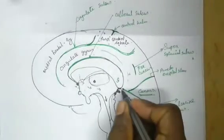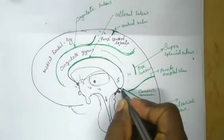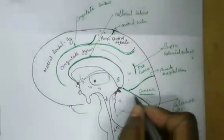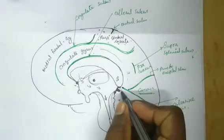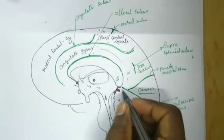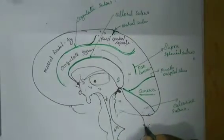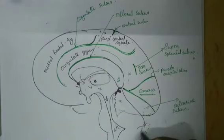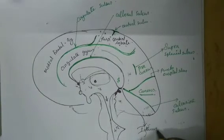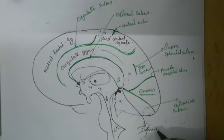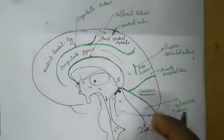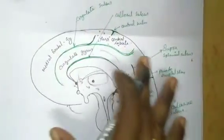The small space which is located in front of the start of the calcarine sulcus is called the isthmus. So these are the sulci and gyri present in the medial aspect of the cerebral hemisphere.